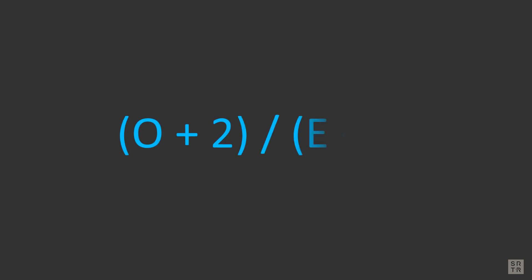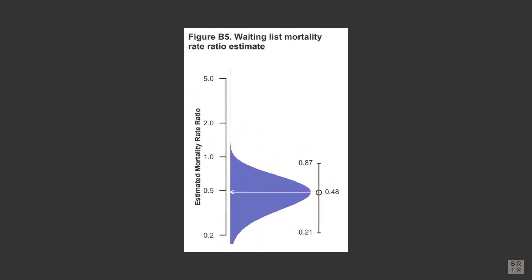The formula is observed plus 2 divided by expected plus 2. This metric basically shows how far off or close to expected a program may have come. 1.0 is considered average, and for waitlist mortality, if a ratio is below 1 then the program is doing better than average, and if the ratio is above 1 it is doing worse than average.